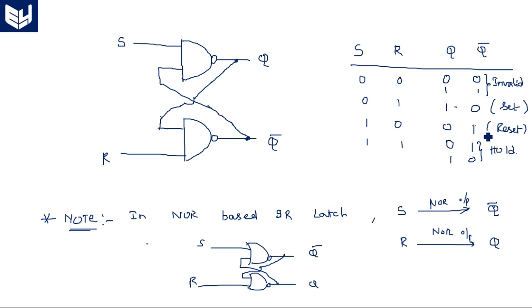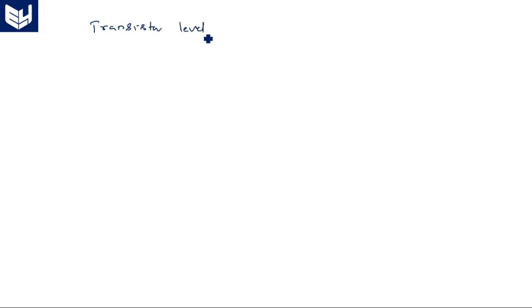In the NOR operation, the outputs are Q bar and Q. Another difference is that for the 1,1 operation in NAND gates it is the invalid state, whereas the complete set is opposite in the NOR case — everything acts like a bubbled or inverted operation. I will now draw the NAND transistor-level diagram and later show the detailed difference.